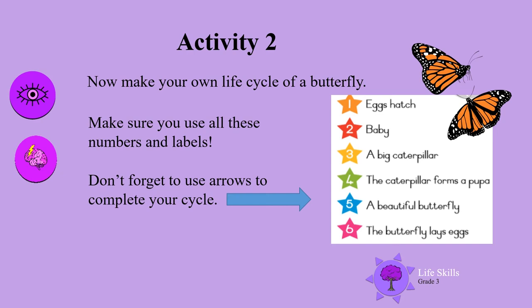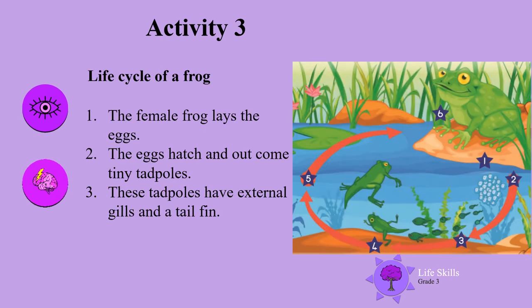Well done, boys and girls. Activity 3, a life cycle of a frog. Number 1, you can see the female frog that has laid eggs. Then the eggs hatch, and out comes tiny tadpoles.